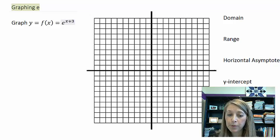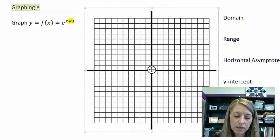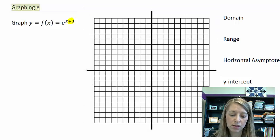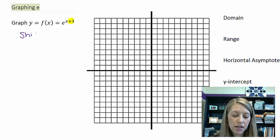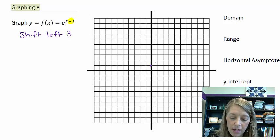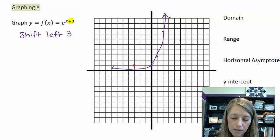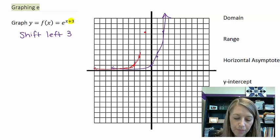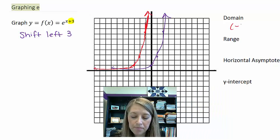What about e to the x plus 3? Well, I'm on the inside of the exponent. So everything is going to happen horizontally. In addition is a shift. The inside we think opposite of normal. So this is actually going to shift it left 3 units. So again, if I take my values that I'm used to seeing for e to the x. I would just shift those values left 3. And so this would be the shape of e to the x plus 3.